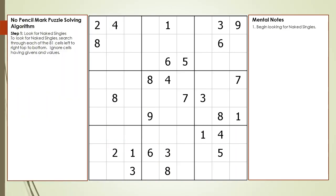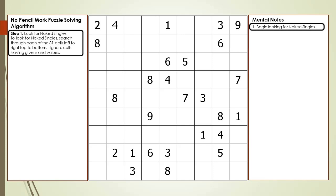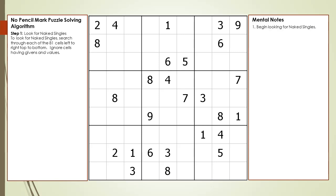Consider the following Sudoku. It has 27 givens in its constellation of givens. Since no values have been set, there are 54 empty or open cells remaining in the puzzle. The first step in solving this puzzle is to look for Naked Singles. We search each of the 81 cells.